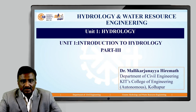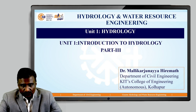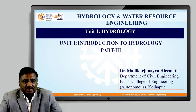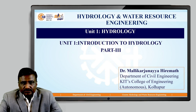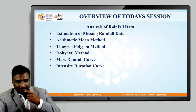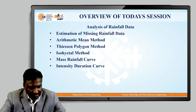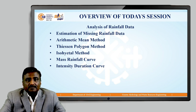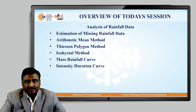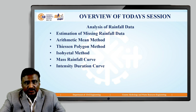Welcome again to the third lecture session on Hydrology and Water Sources Engineering course. My name is Mallika Janaya-Haramat, Professor of Civil Engineering Department in KIT's College of Engineering, Kualapur. In today's session I will discuss analysis of rainfall data: estimation of missing rainfall data by arithmetic mean method, Thiessen's polygon method, isohyetal method, and also we will discuss what is mass rainfall curve and intensity duration curve.